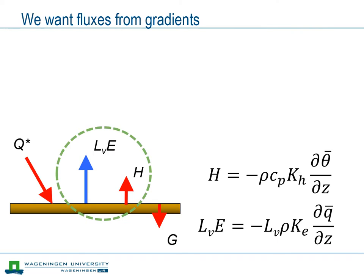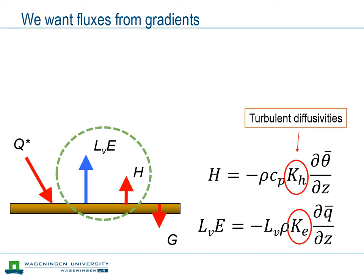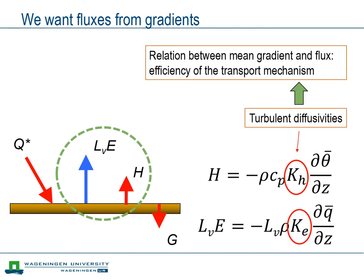Our final aim is to find a way to determine the fluxes of sensible and latent heat from vertical gradients of temperature and humidity. The factor that connects the flux to the gradient is the turbulent diffusivity. This diffusivity can be interpreted as the efficiency of the transport mechanism. Since the transport is taken care of by turbulence, we need to better understand turbulence if we want to understand the turbulent diffusivity.